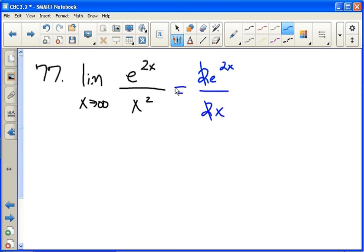Well, they still both go to infinity. E to the 2x goes to infinity—it's the same thing we had when we started. And as x goes to infinity, obviously x goes to infinity. So we can do it one more time.